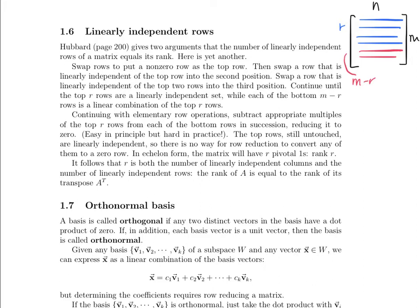What we end up doing after we're finished with all this, the top rows are totally unchanged. Those are still the way they are, and the bottom rows are just all zeroes. Then we note that there's really no way for row reduction to convert any of these to a zero row because they're all linearly independent from each other. Since they can't be expressed as a linear combination of each other, you can't subtract off multiples of the other rows and zero them out.